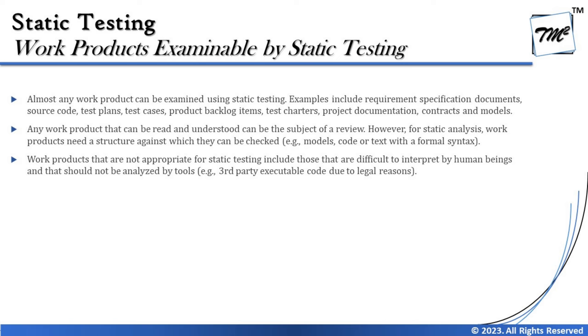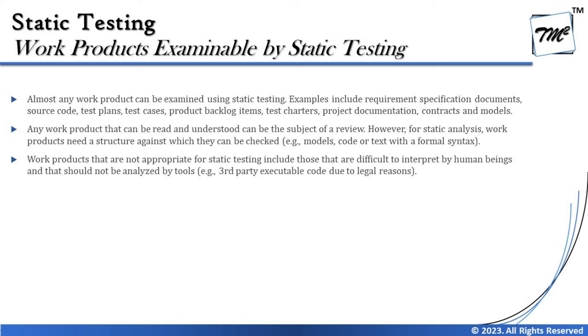Every single thing can be reviewed — maybe not always formally, but informally you can certainly review them. Any work product that can be read and understood can be subject to a review; however, static analysis work products need structure against which they can be checked. Things like code, control flow diagrams, data flow diagrams, or business models can be analyzed with tools. Work products not appropriate for static testing include those difficult to interpret by human beings, such as third-party executable code, which may have legal restrictions.